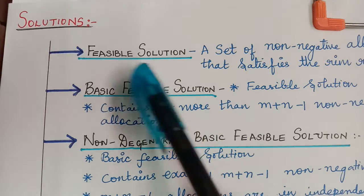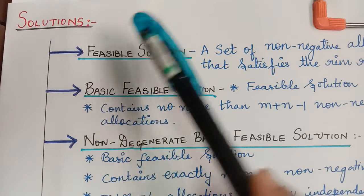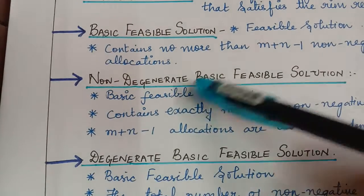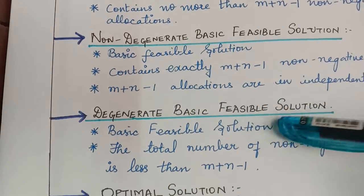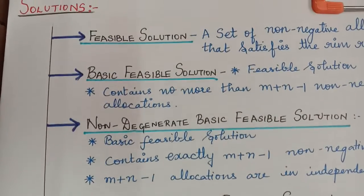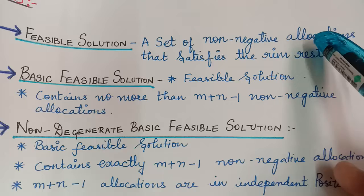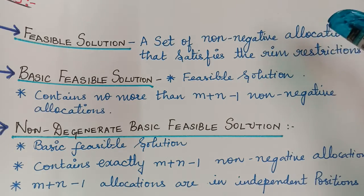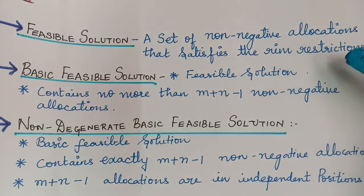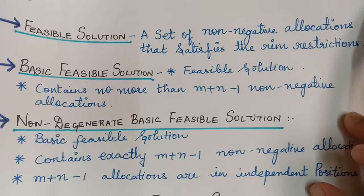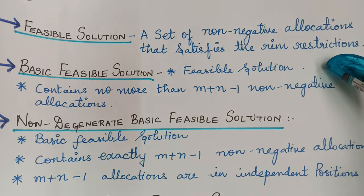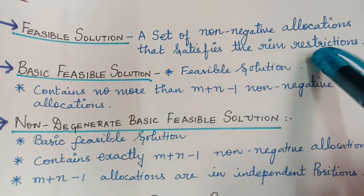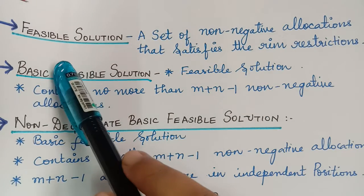Now we shall learn about the solutions of a transportation problem. There are different types: feasible solution, basic feasible solution, non-degenerate basic feasible solution, and optimal solution. A feasible solution is a set of non-negative allocations that satisfies the RIM restrictions. The RIM restrictions refer to the necessary and sufficient condition that total supply equals total demand. When a solution satisfies that restriction, it is known as a feasible solution.